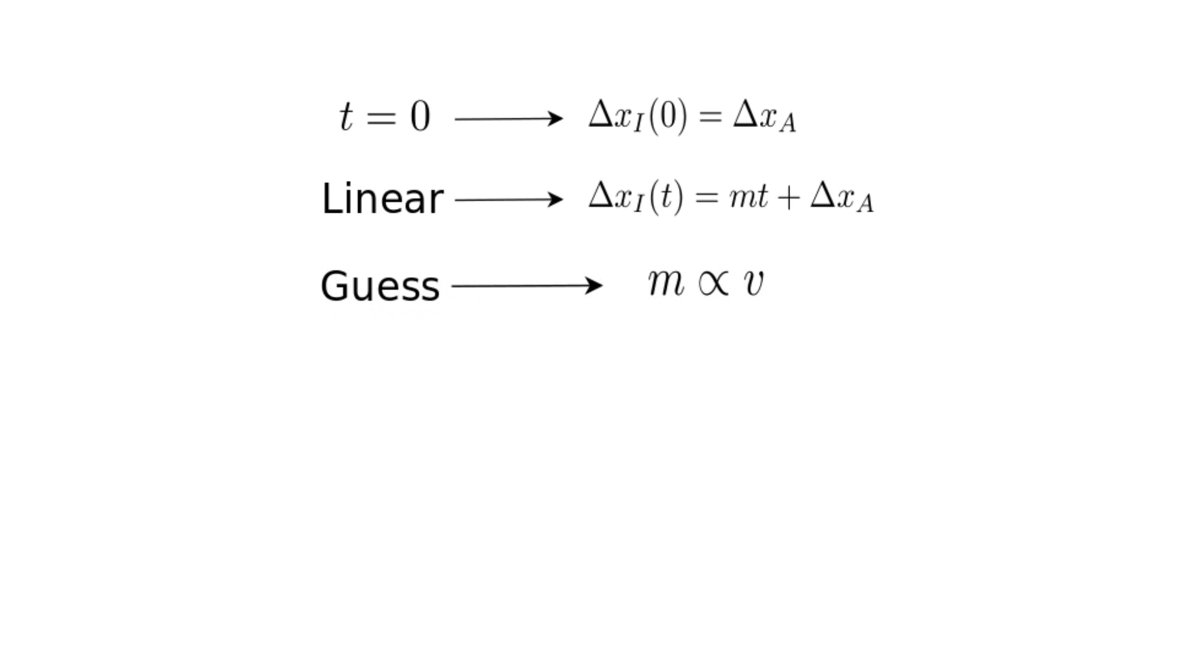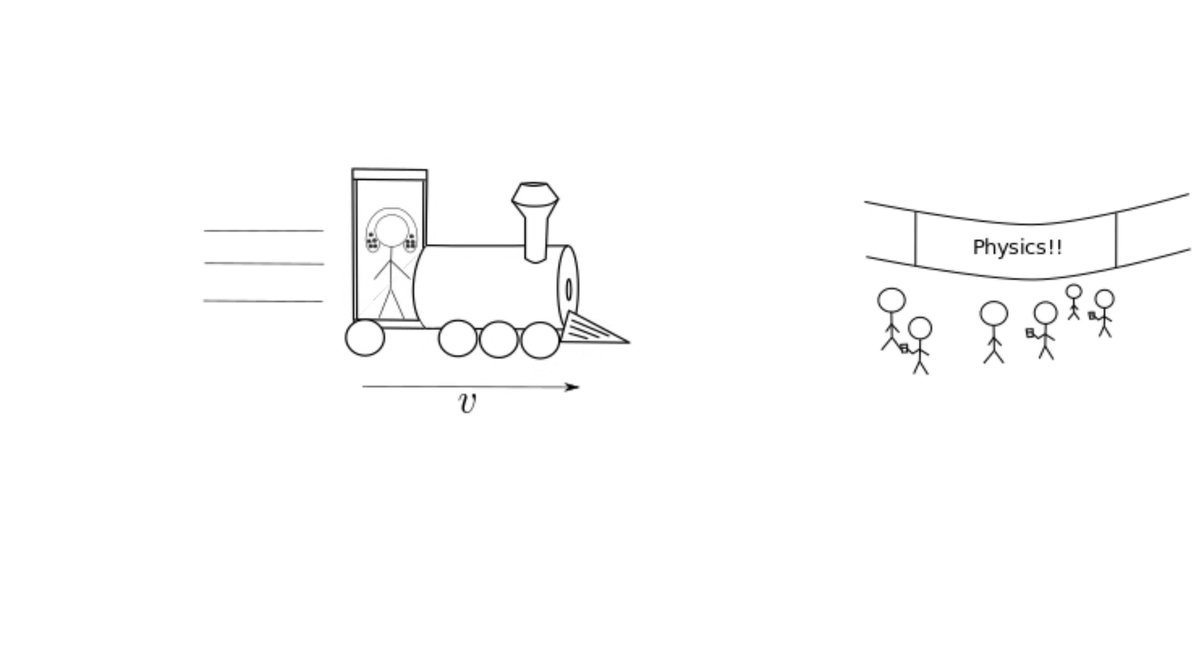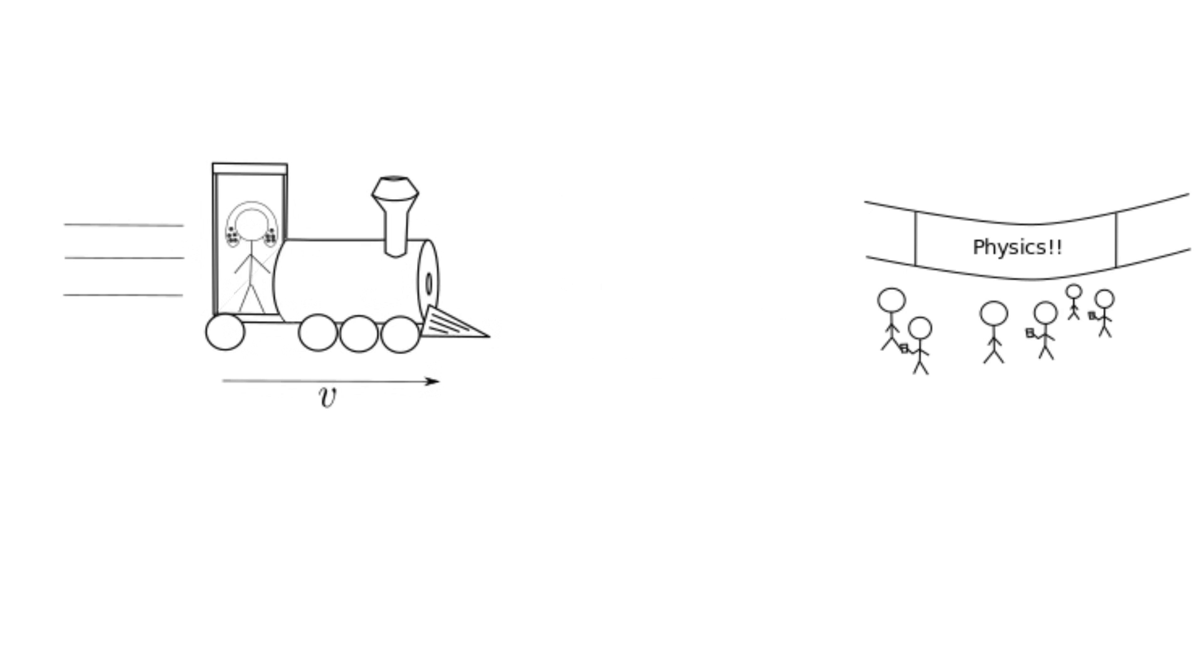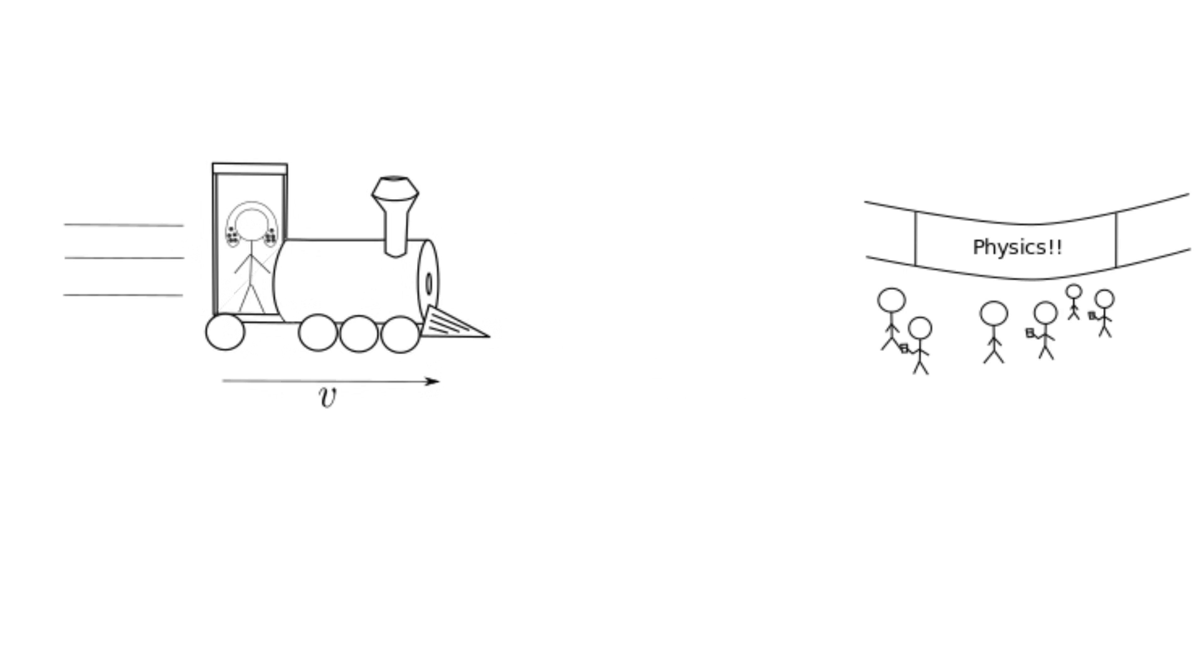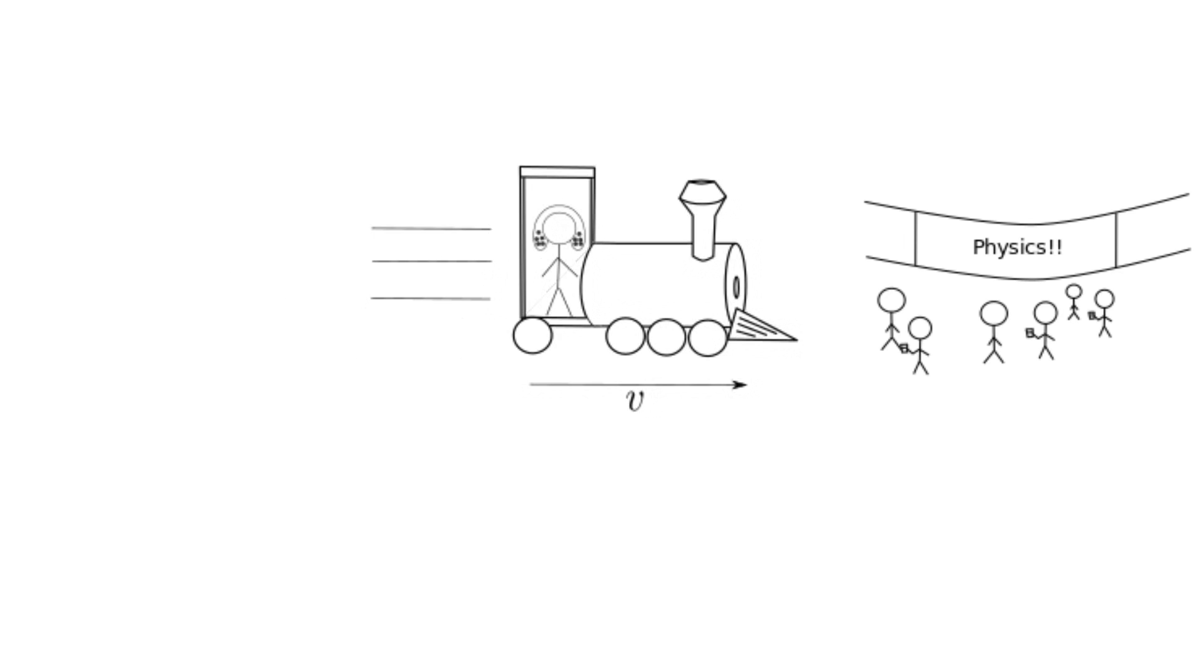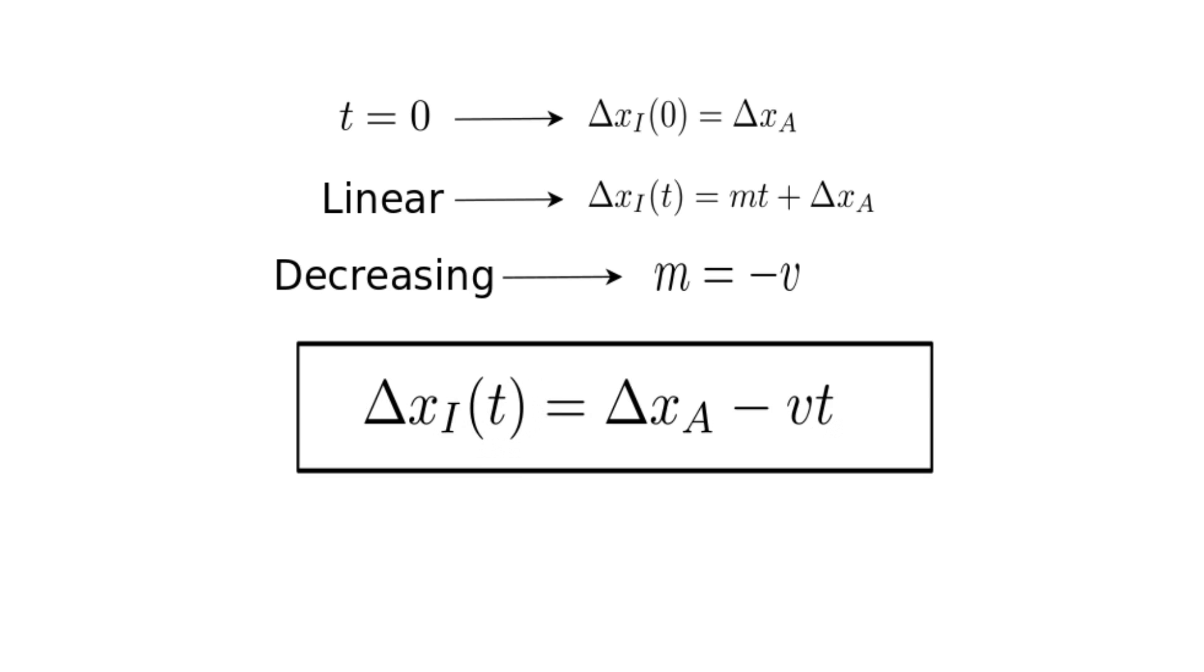Since how quickly the conference approaches Isaac directly depends on how fast the train is moving. This relationship becomes clear when we realize that Isaac's distance to the conference is decreasing. This means that as time goes on, delta xi must get smaller, so we can confidently say that m is equal to negative v. Putting this all together gives delta xi is equal to delta xa minus v times t.